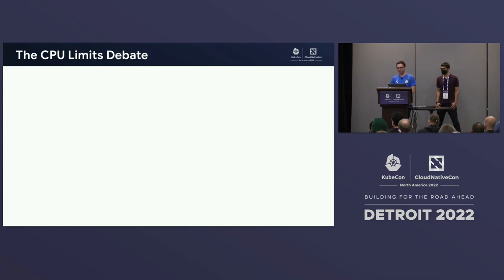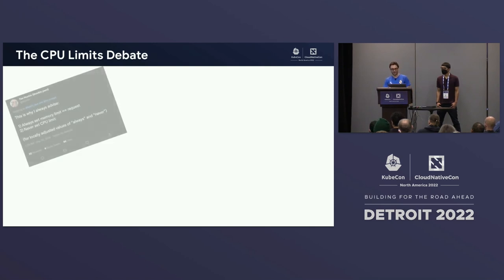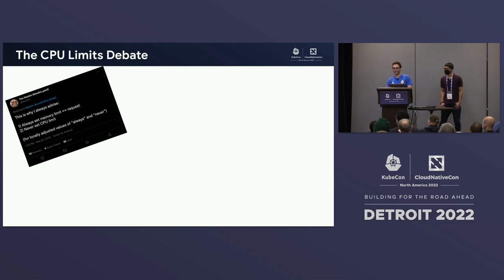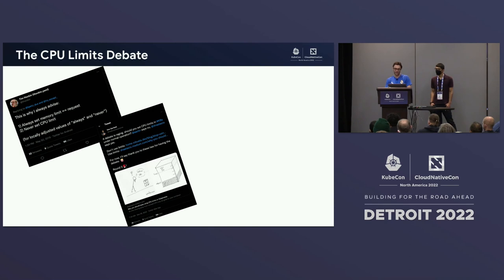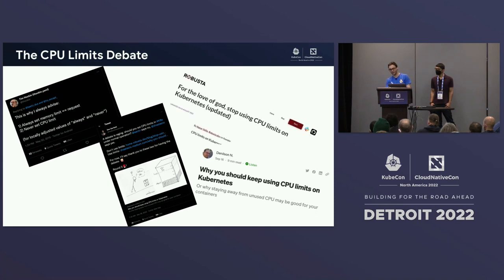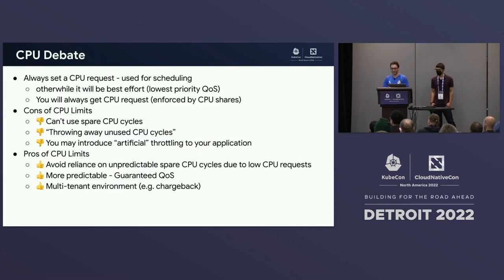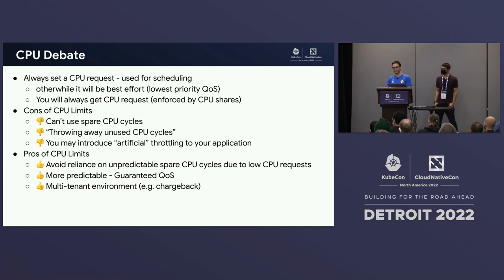There's an ongoing CPU limits debate. You'll see conflicting advice online: 'never set CPU limits,' 'always set CPU limits,' and everything in between. Let me give my take. One thing everyone agrees on: always set a CPU request. CPU requests are used for scheduling, they give you the minimum CPU you need, and without one you become a best-effort pod QoS with no CPU guarantee.